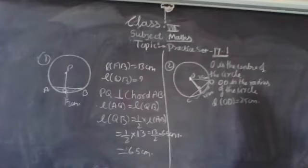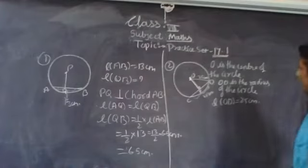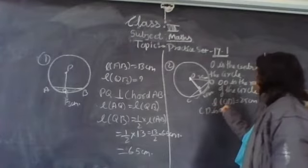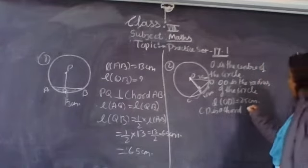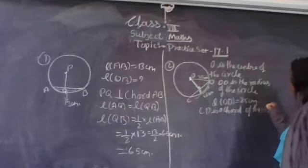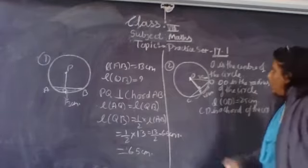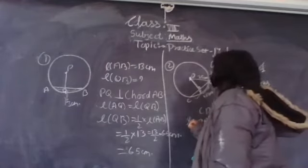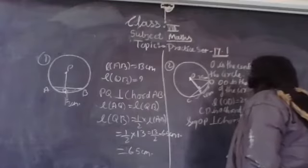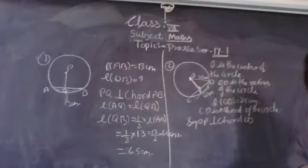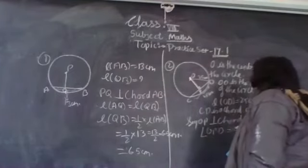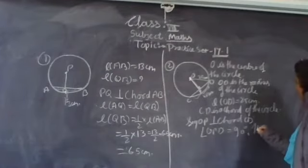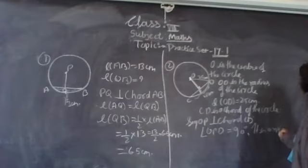CD is a chord of the circle. OP is perpendicular to chord CD, so angle OPD is equal to 90 degrees. This means it is a right angle triangle.